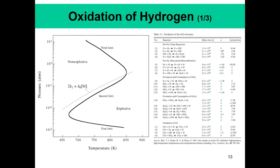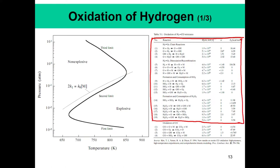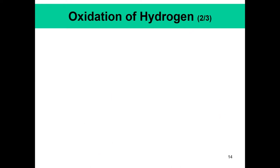To understand what controls this behavior, we need to understand the reaction mechanism of hydrogen-oxygen oxidation, which involves 9 species and 19 reactions. We will study these in detail to understand what controls this explosive behavior — this Z curve with its limits of explosion and non-explosion.